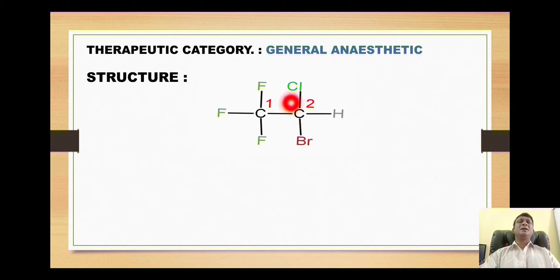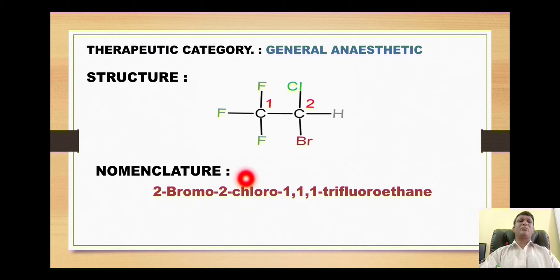The IUPAC nomenclature of this compound is this one. Here, the carbon which is highly substituted by halogens is given number one. So on carbon number one we have three fluorines, and on carbon number two we have a bromine and a chlorine.